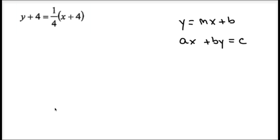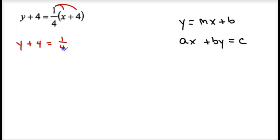Second example: y plus 4 equals 1 fourth times the quantity of x plus 4. First step: distribute the 1 fourth to both numbers in the quantity. So I get y plus 4 equals 1 fourth x plus 1, since 1 fourth times 4 is 1.